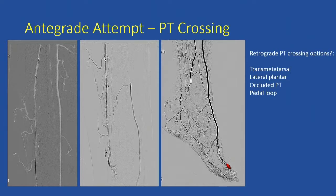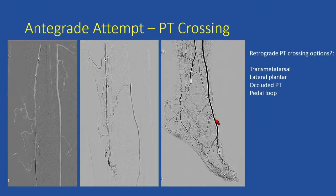Retrograde options I considered included transmetatarsal and lateral plantar access, as well as sticking the occluded posterior tibial artery directly. I didn't list transcollateral access because this collateral is likely proximal to the occlusion. Lastly, I considered a pedal loop technique to access the distal cap of the posterior tibial artery occlusion.